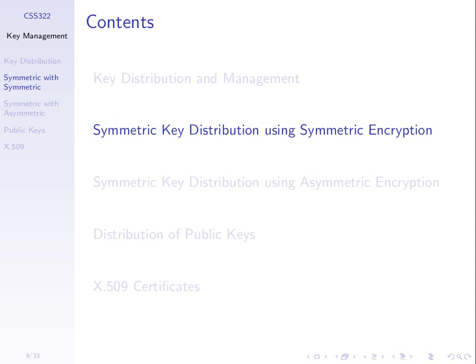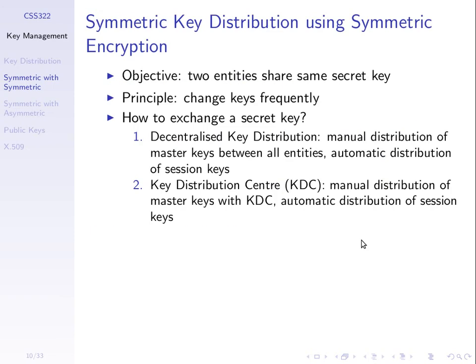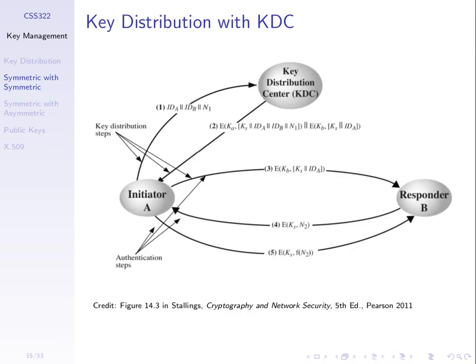The problem is: how do we get the master key? We must manually exchange the master key. If we manually exchange master keys with everyone, there are a lot of exchanges needed. The approach we arrived at was using a centralised key distribution centre — each user manually exchanges a master key with a KDC, and for two users to communicate, they go via the KDC to get a session key. This reduces the number of manual exchanges, and we went through those five steps and how this protocol stops attacks. It's all about getting a shared secret key between A and B.